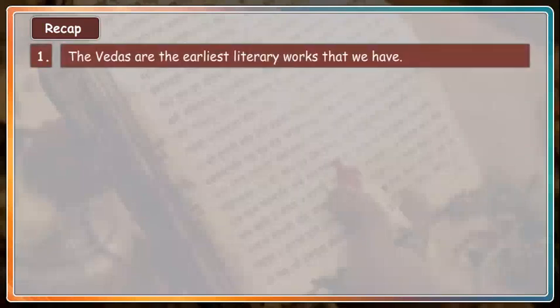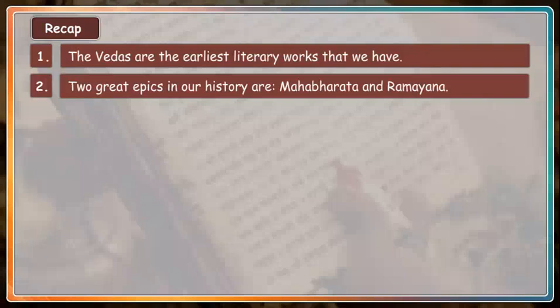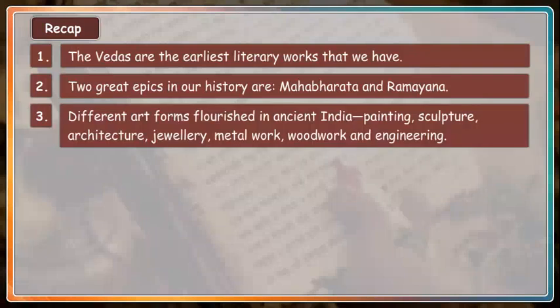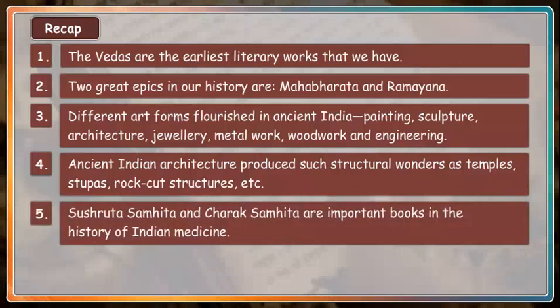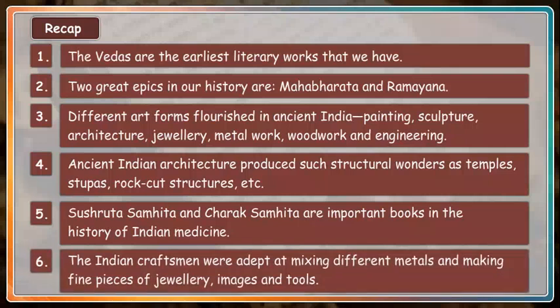Recap: The Vedas are the earliest literary works that we have. Two great epics in our history are the Mahabharata and the Ramayana. Different art forms flourished in ancient India including painting, sculpture, architecture, jewellery, metalwork, woodwork and engineering. Ancient Indian architecture produced structural wonders such as temples, stupas and rock-cut structures. The Sushruta Samhita and Charak Samhita are important books in the history of Indian medicine. Indian craftsmen were adept at mixing different metals and making fine pieces of jewellery, images and tools.